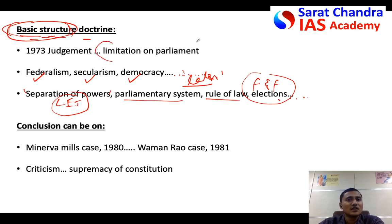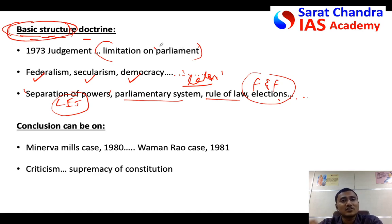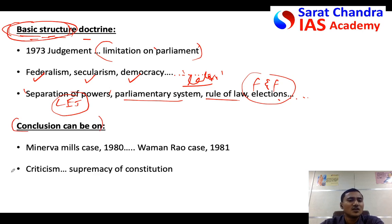The 1973 case placed limitations on Parliament because now Parliament cannot amend everything in the Constitution — while doing any amendment, it has to keep in mind the basic structure doctrine. In the conclusion, you can conclude in two ways.